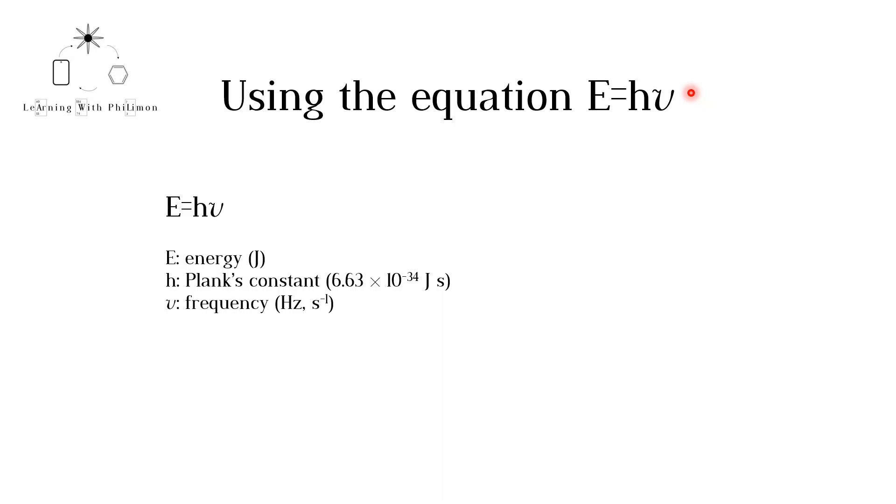we will see how the wavelength of light relates to its energy. According to Planck's equation, the energy of a photon, which is the fundamental particle of light, E, is equal to Planck's constant, h, multiplied by the frequency nu.